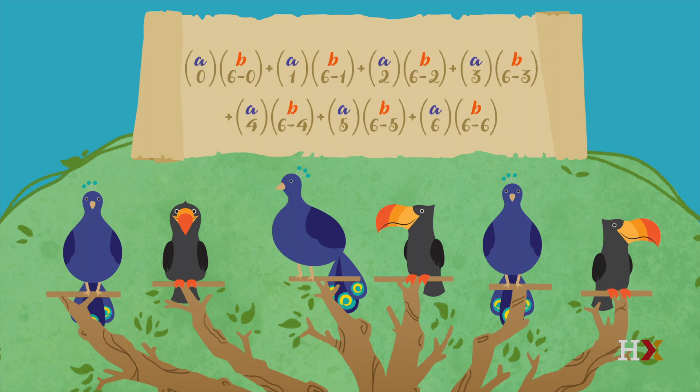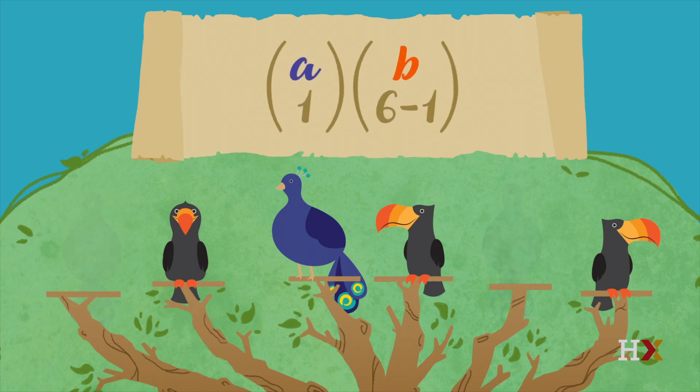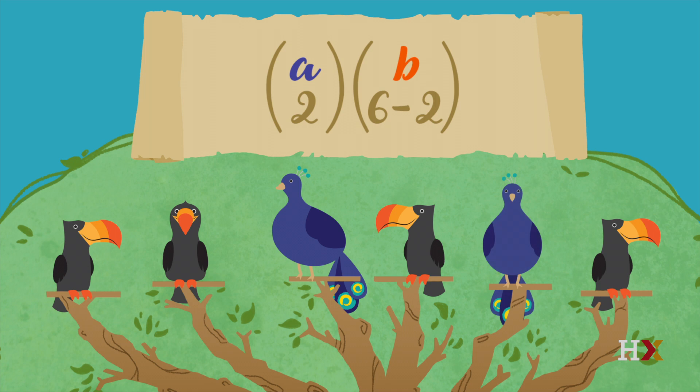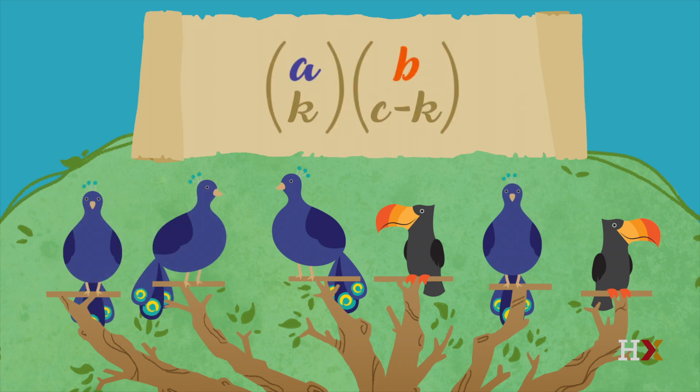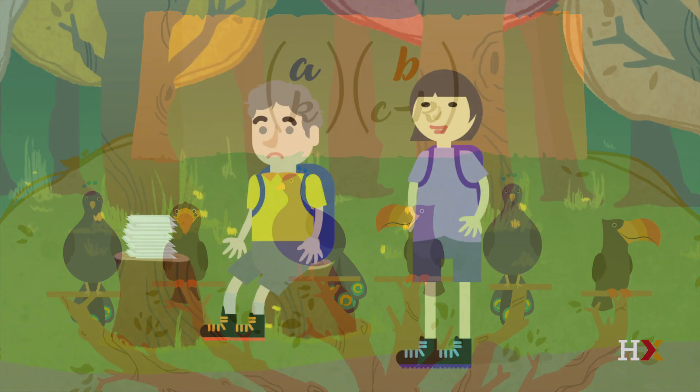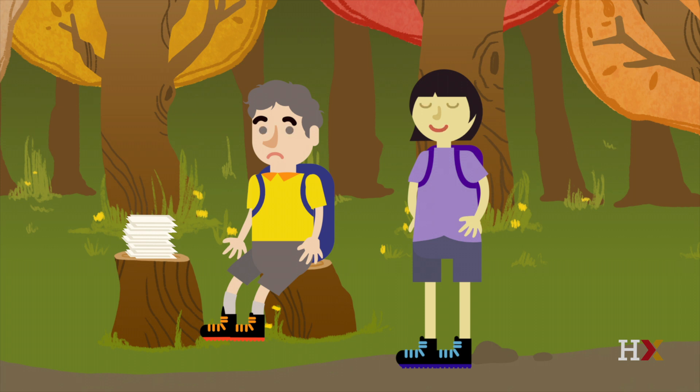The left-hand side just breaks this into cases. If there is one peacock perched on a top branch, there must be five toucans perched on top branches. If there are two peacocks, there must be four toucans. If there are k peacocks, there must be c minus k toucans. So count how many possibilities there are for which k peacocks and which c minus k toucans are on top branches. Then sum up the cases, since we want the total number of possibilities, not just the number for one value of k.